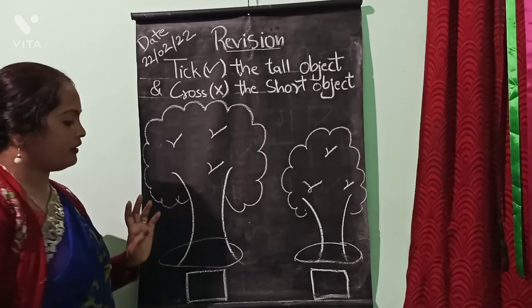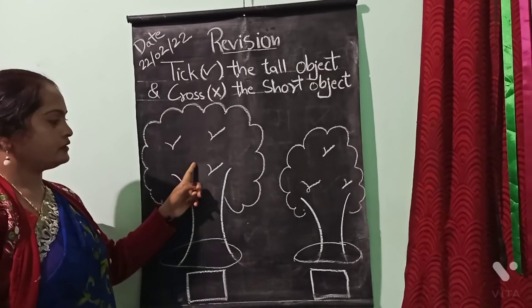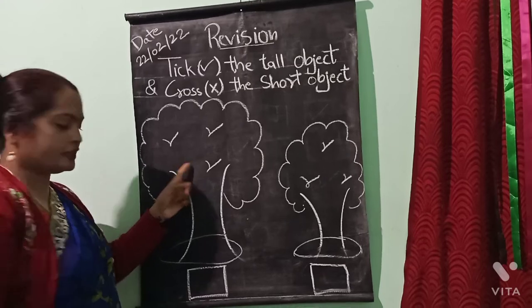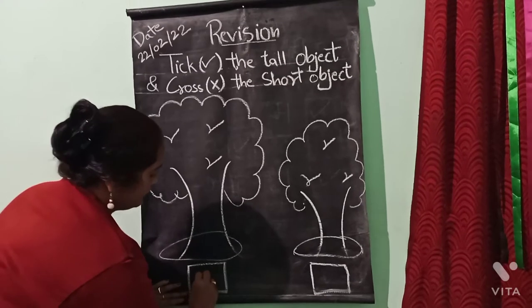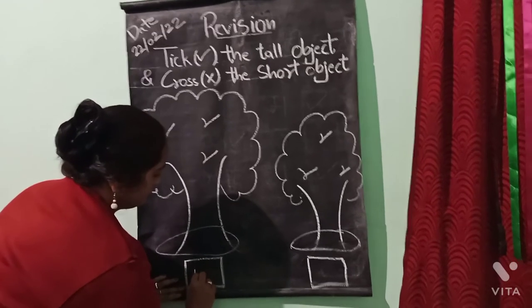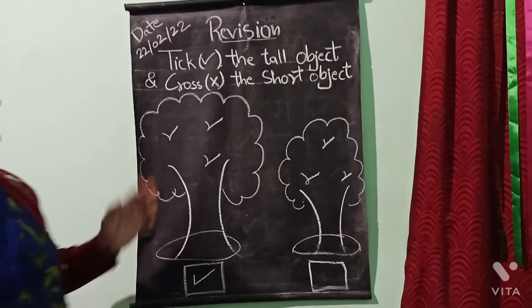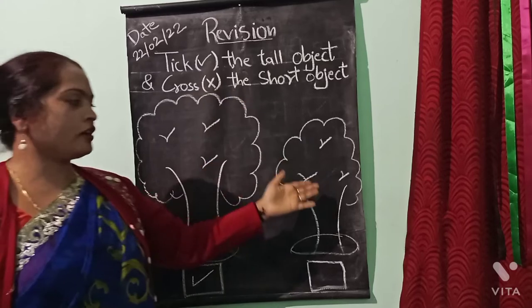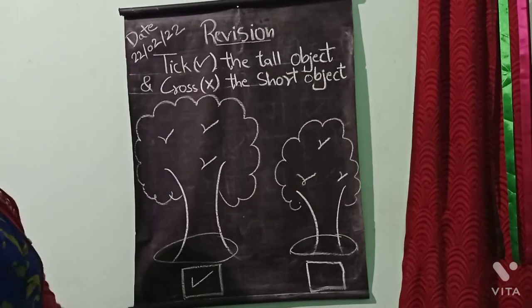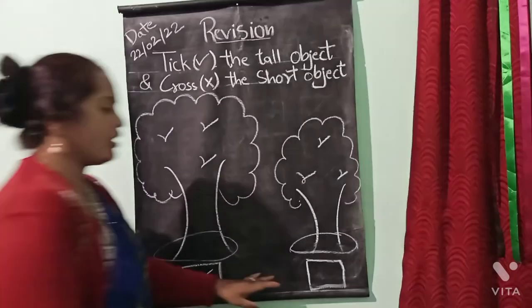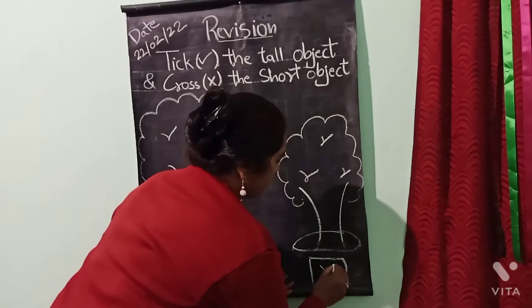So it is in the box. Tall tree. And this is the short tree — cross in the box. Okay, children?